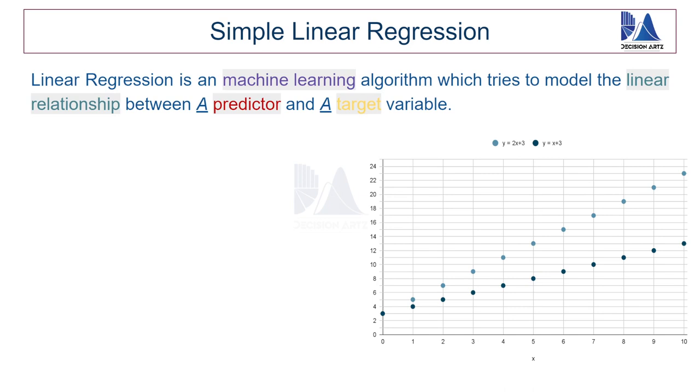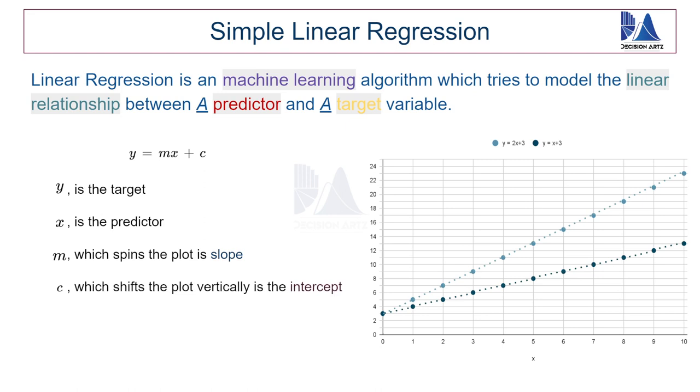So any relationship between y and x in the form of y equal to mx plus c is going to form a line. So if you connect all the dots in this scatterplot, you will get a line. Now there are four things that make up this equation of a line, which is y which is the target variable, x is the predictor, m is the slope which spins the graph and c is the constant which shifts the graph. And it is also important to note that c also gives us the point where the line cuts the y axis at x equal to 0. So now we know what a predictor is, what a target variable is and what does linear relationship mean.